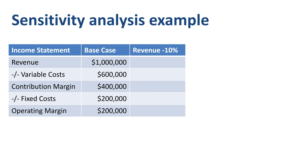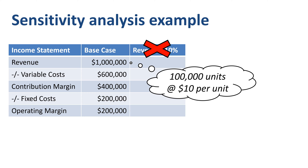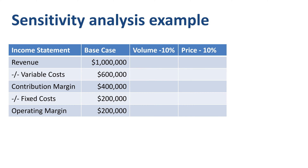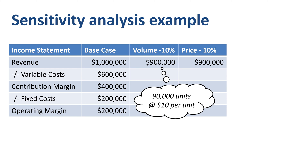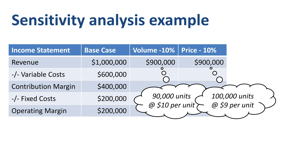What is the effect of a change in revenue on operating margin? Wrong question! Not every type of change in revenue has the same effect on operating margin. Currently, the company expects to sell 100,000 units of one single type of product at $10 each. If we want to analyze the impact of a change in revenue on operating margin, we should either take a 10% decrease in volume or a 10% decrease in price — or even better, analyze the effect of each versus the base case side by side. A 10% decrease in volume leads to revenue of $900,000 (90,000 units at $10 each), while a 10% decrease in price also leads to revenue of $900,000 but with a different composition: 100,000 units sold at $9 each.